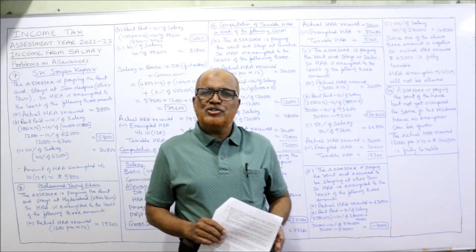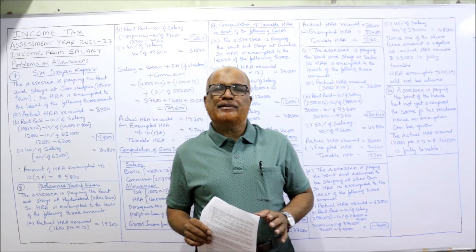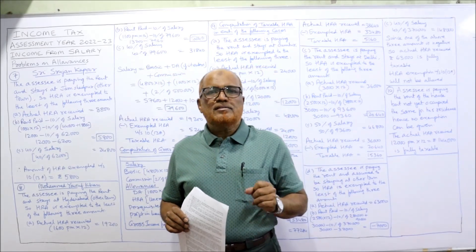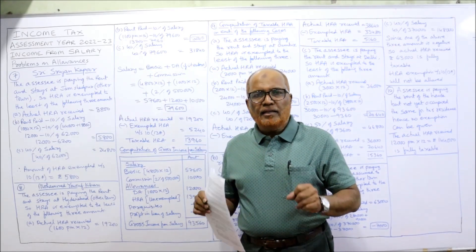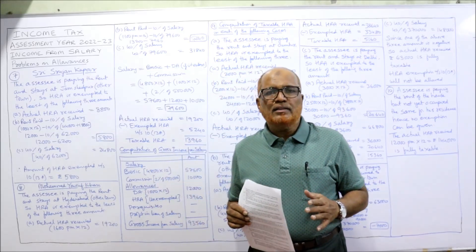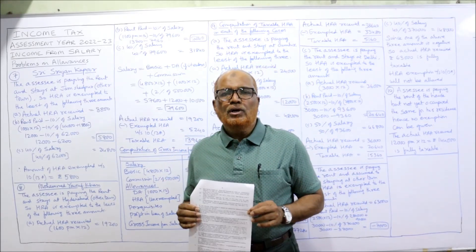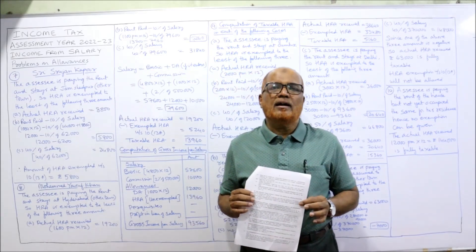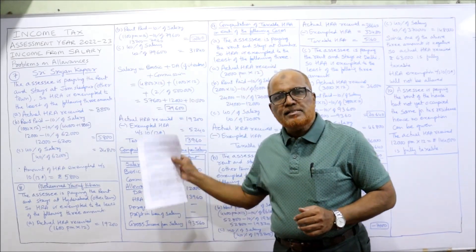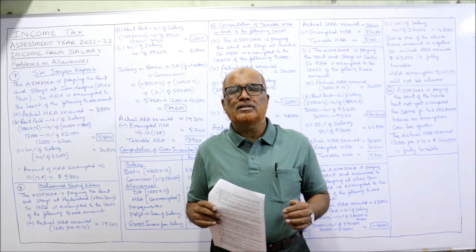Hello viewers, welcome to my channel. I'm Hashem Ali Khan. In the last video, I completed six problems on allowances — entertainment allowance and house rent allowance. In this video, I'm going to explain a few more problems on allowances. Before starting the seventh problem, I expect my viewers to have a printout of the problems given in the link under my description. Take a screenshot of the points for the next few problems, then I'll explain every point in detail.